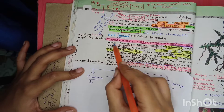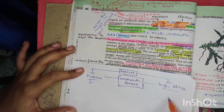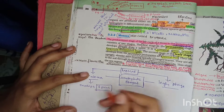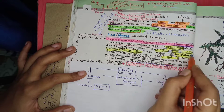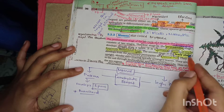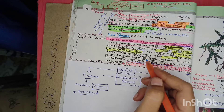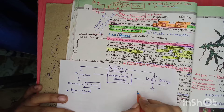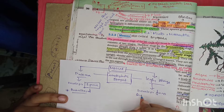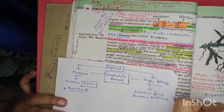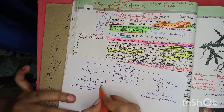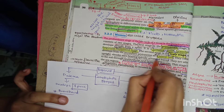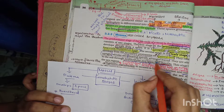The protonema stage is creeping, green, and branched - frequently filamentous. The second stage is the leafy stage, which develops from a secondary protonema as a lateral bud. The leafy stage consists of an upright slender axis bearing spirally arranged leaves.